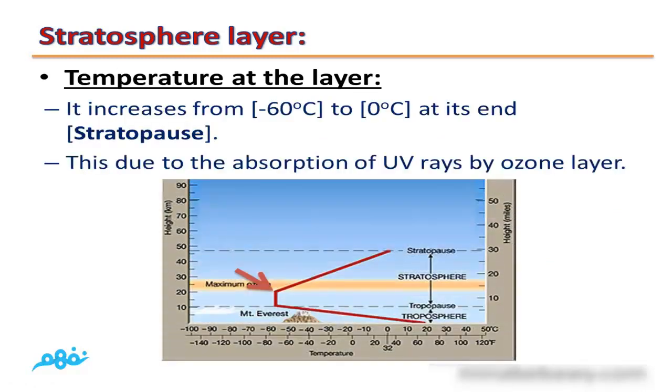Temperature at stratosphere layer: As you can see, the temperature increases gradually from negative 60°C at its beginning till it reaches 0°C at its end.